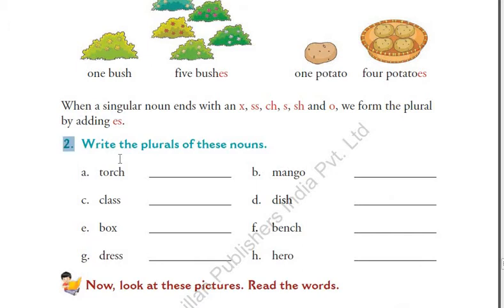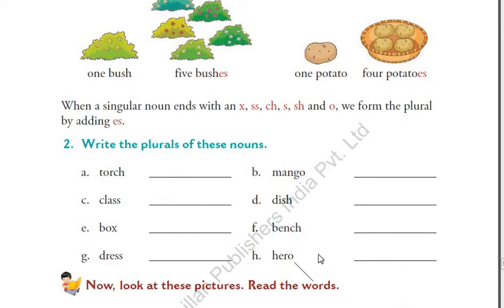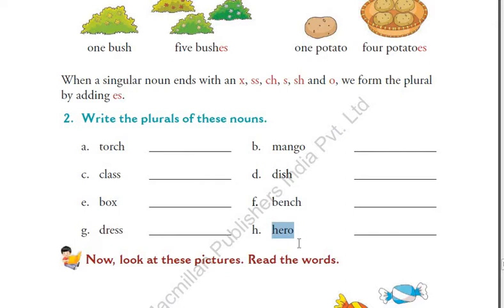Then we solved exercise number 2, where you had to write the plural forms by this method. 'Torch' became 'torches,' 'class' became 'classes,' and 'mango' became 'mangoes' — all by adding 'ES.' For 'bench,' you just add 'ES' as well. And 'hero' becomes 'heroes' — if you have more than one favorite hero, you say 'these are my favorite heroes.' We just add 'ES' to make it plural.